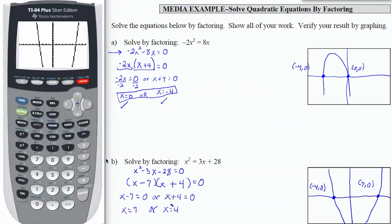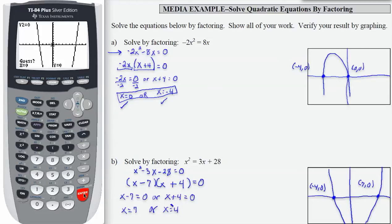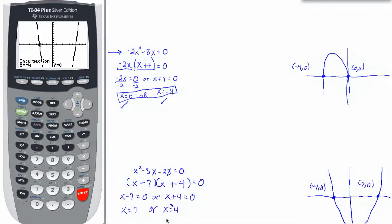Now let's go ahead and use our calculator to find these numbers. If I go 2nd calc 5, that's going to give me one of my intersections. That's going to give me the negative 4, 0. So this one checks.